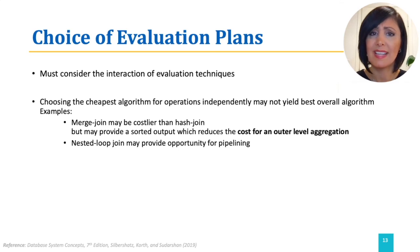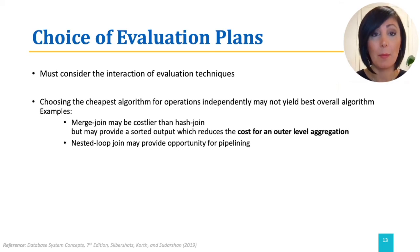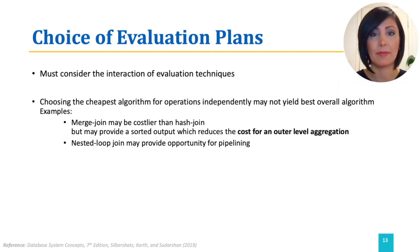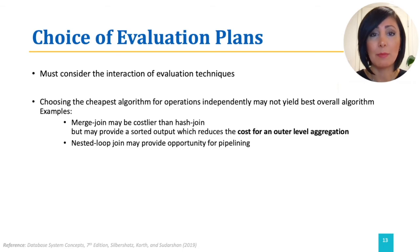Or nested loop join might enumerate a lot of results, but provide the opportunity to pipeline the results to the next operation, and remove the need to write intermediate values to disk and read them back. Therefore, it might impose a lower cost overall.